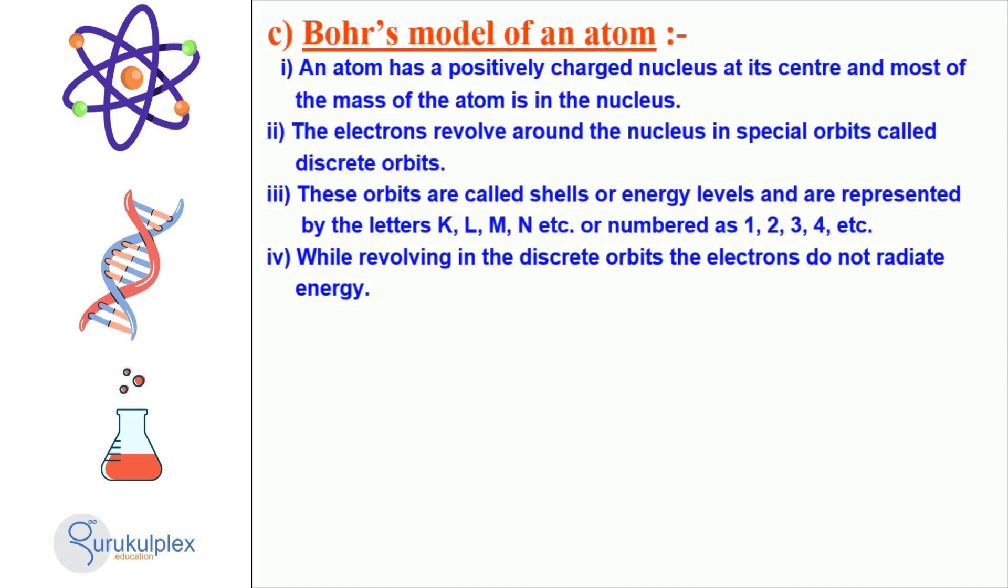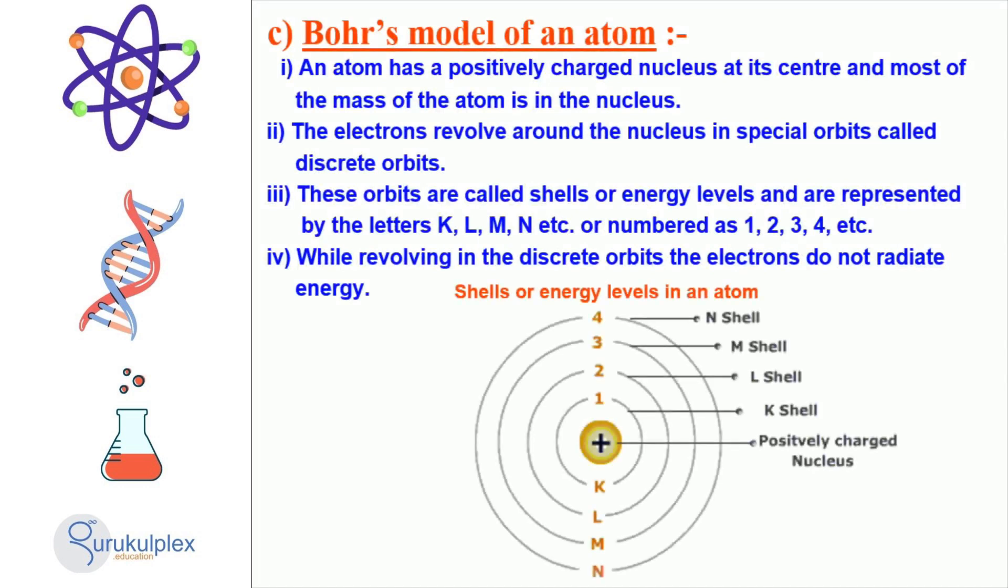In Niels Bohr's atomic model, it is stated that an atom has a positively charged nucleus at its center, and most of its mass is in the nucleus. Electrons are found in distinct orbits, otherwise known as shells or energy levels, which are displayed using letters or numbers. Moreover, electrons do not emit energy while rotating in these orbits. This model was a great step forward in our understanding of the form of an atom.